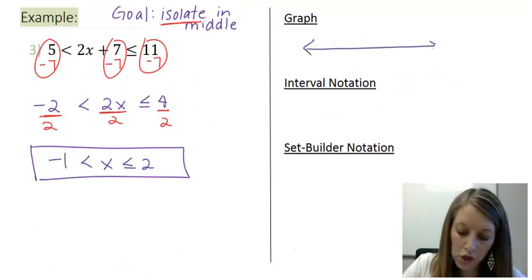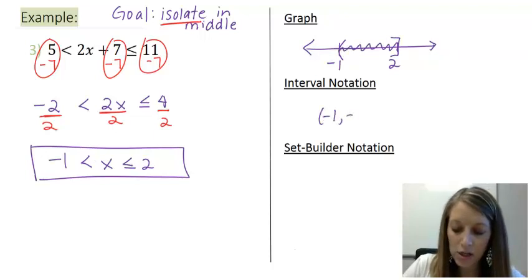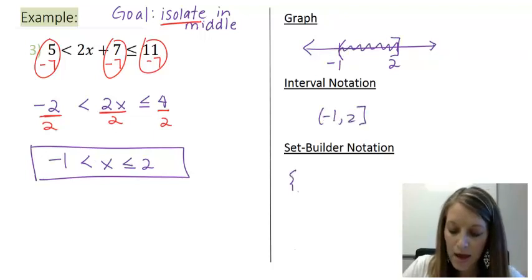So our graph from there is shading in between negative 1 and 2. Negative 1 has a parenthesis, 2 has a bracket and we shade in the middle. Interval notation of course is the same thing. And set builder notation we just write down what we have.